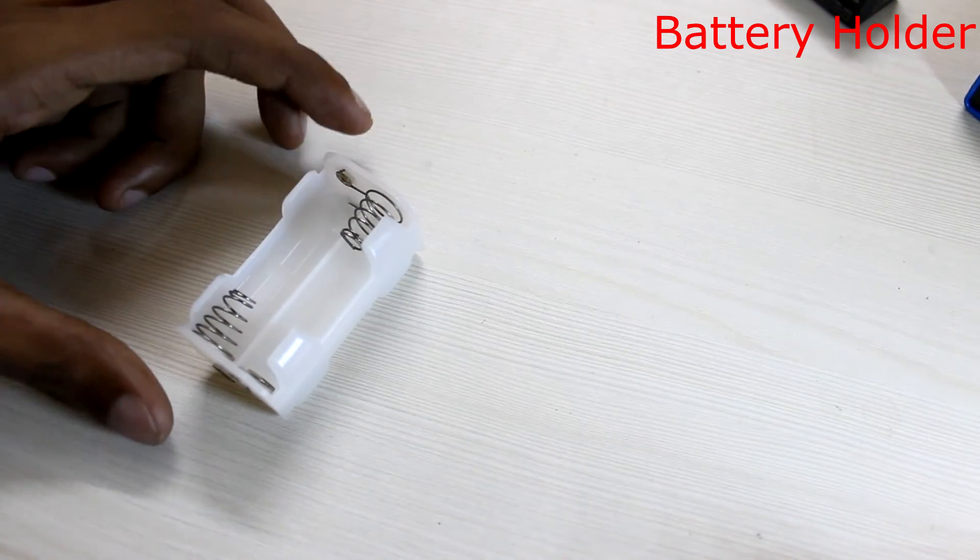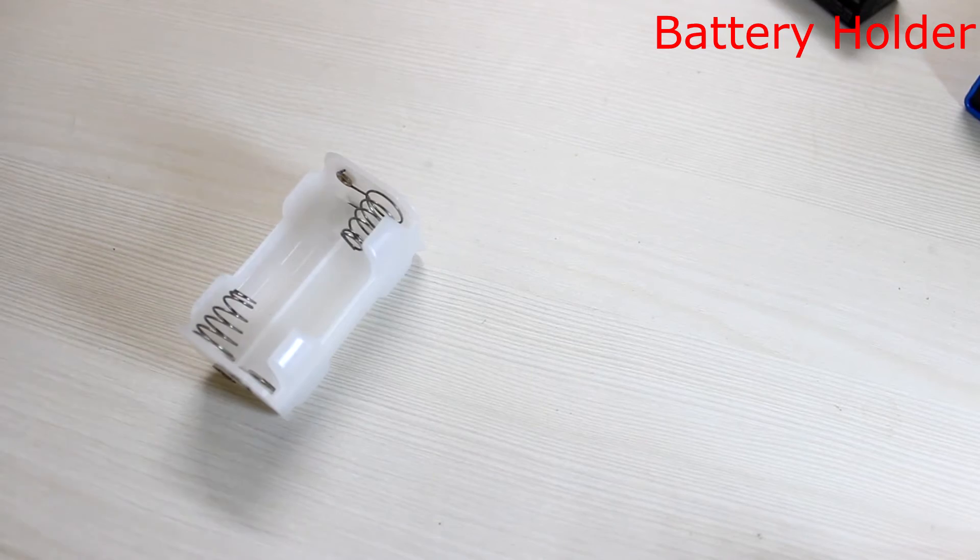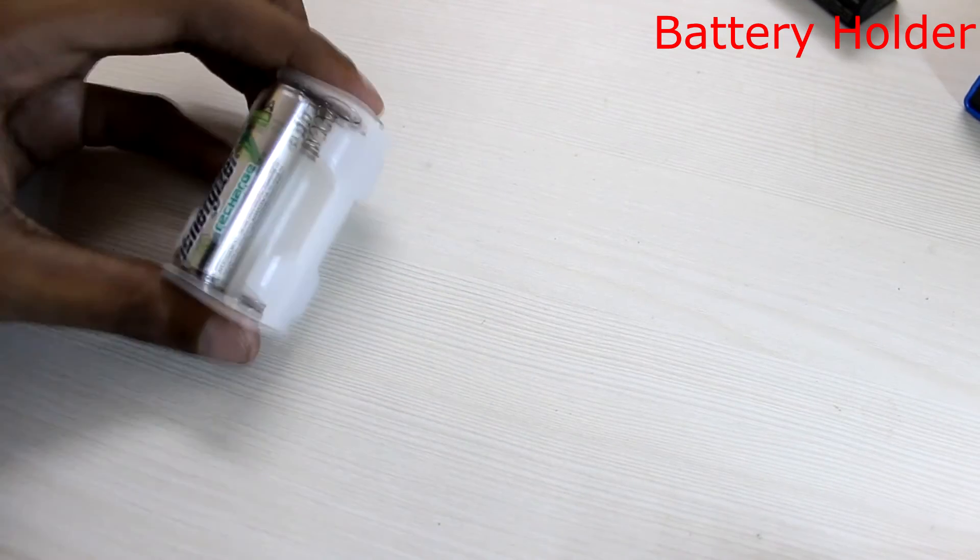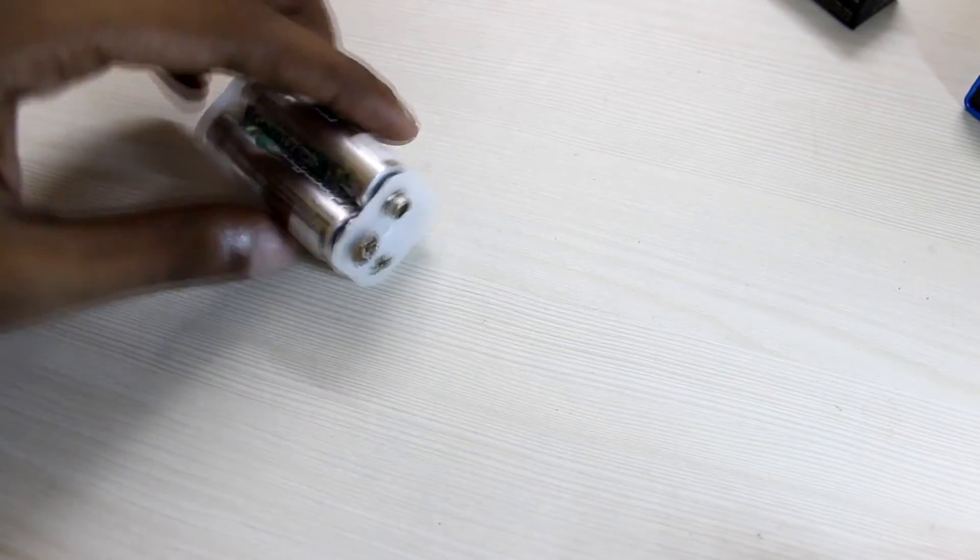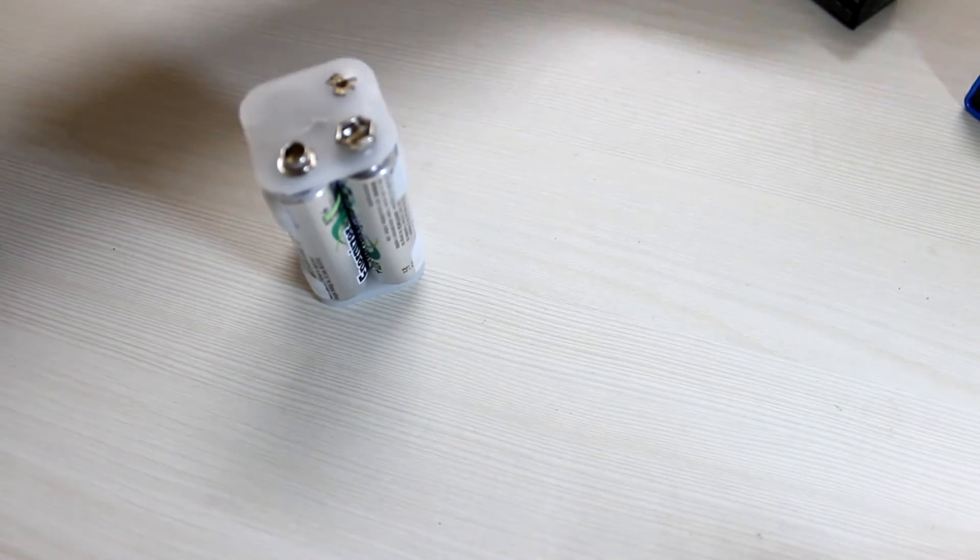We can also use battery holders to hold the double A batteries to power your circuit. Here let me connect 4 double A batteries in series. 4 times 1.2 volts is 4.8 volts. So this circuit gives a total of 4.8 volts output.